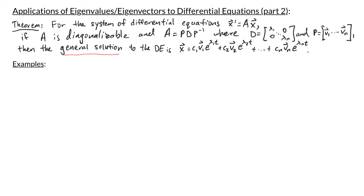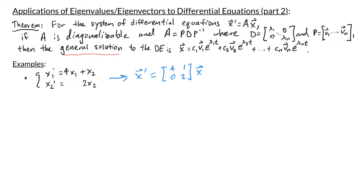Let's consider the following system of differential equations: x1 prime equals 4x1 plus x2, and x2 prime equals 2x2. I want to write this in the form x prime equals matrix A, in this case 4, 1, 0, 2, times x. Our first step in finding the general solution is to find the eigenvalues and then their corresponding eigenspaces. Since we have a triangular matrix, we can easily read off the eigenvalues: lambda equals 4 and 2.